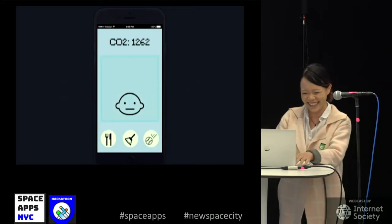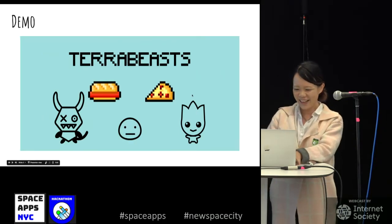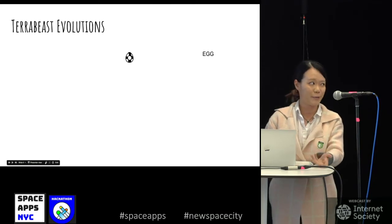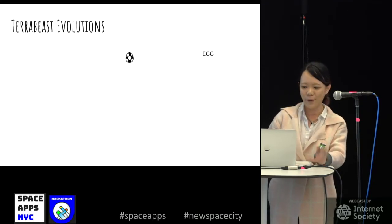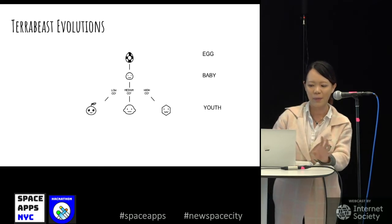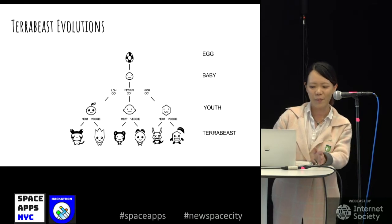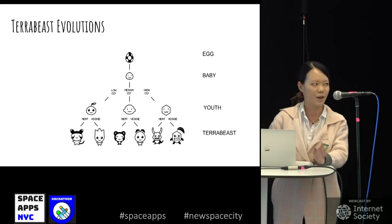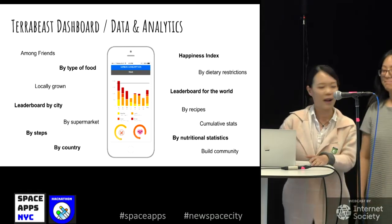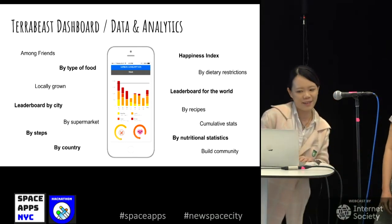It evolved! So it evolves by feeding the food that you eat, by sending a photo. It goes from egg to baby, and then based on how much carbon footprint your food has, it can turn into three different paths. Furthermore, it can grow to six different paths based on whether it's a meat or vegetarian diet. And Tim is going to talk about analytics.